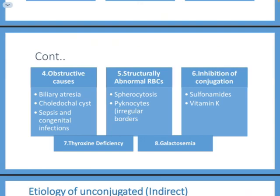Additional causes include inhibition of conjugation — either from drugs like sulfonamides and vitamin K, or from thyroxine deficiency, since thyroxine increases glucuronosyl transferase activity. Decreased thyroxine therefore interrupts conjugation, leading to hyperbilirubinemia. Metabolic diseases like galactosemia can also present with pathological jaundice.